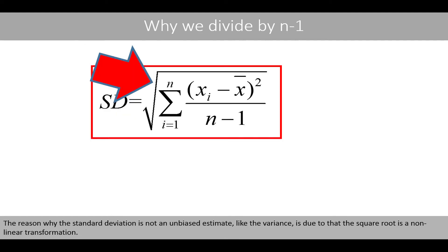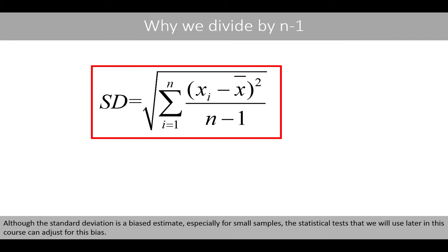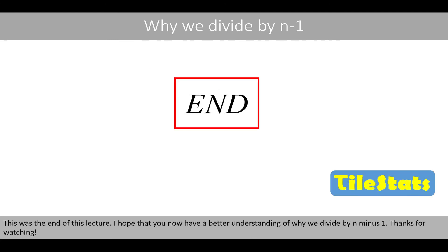The reason why the standard deviation is not an unbiased estimate like the variance is due to the square root being a non-linear transformation. Although the standard deviation is a biased estimate — especially for small samples — the statistical tests that we'll use later in this course can adjust for this bias. This was the end of this lecture. I hope that you now have a better understanding of why we divide by n minus 1. Thanks for watching.